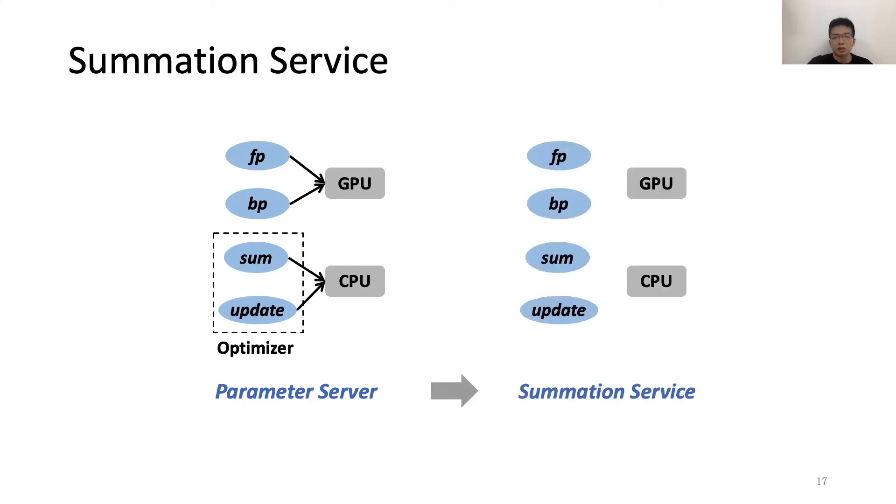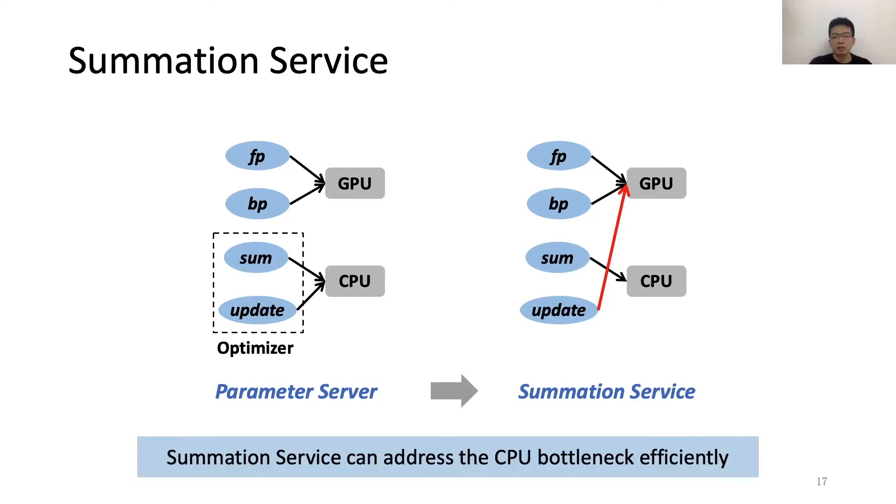With this finding, let's rethink the function placement of DNN training. For PS, it places the forward and backward propagation on GPUs, which is a common practice, but puts the entire optimizer, including the summation and update, on CPUs. Our abstraction called Summation Service is different. While we do not change the forward and backward propagation, we move the parameter update, which is more computation intensive to GPUs and keep the much simpler summation in CPUs. This way, the Summation Service abstraction can address the CPU bottleneck efficiently.